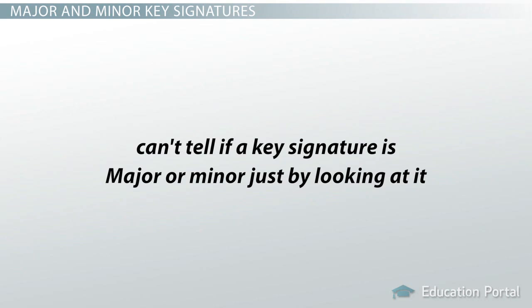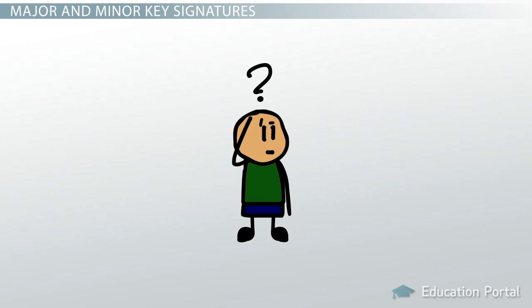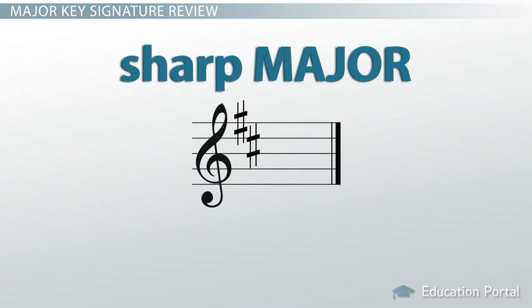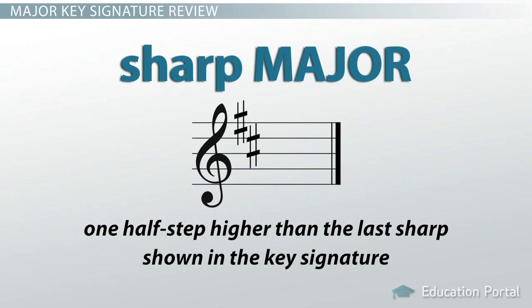Where you assume a major key signature, I assume a minor key signature. Sounds confusing? Don't worry. Let's start with what you already know. When you see a key signature, your automatic response is to figure out the key, right? So if it's a sharp major key signature like this one, you know that the key is one half step higher than the last sharp shown in the key signature.